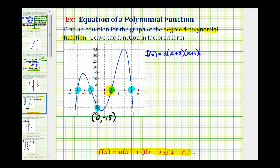Next, if we have a zero of positive two, we must have a factor of x minus two. And if we have a zero of positive five, we must have a factor of x minus five.